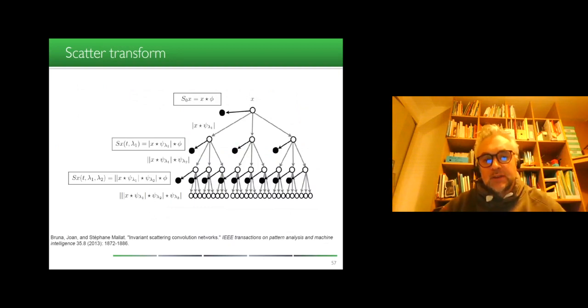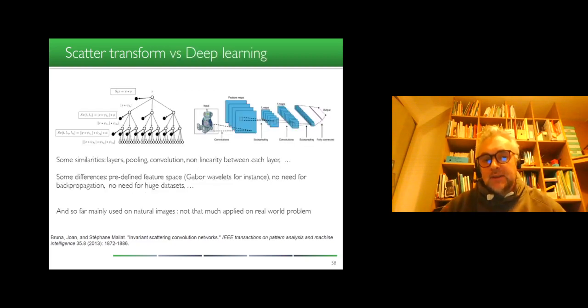So this scatter transform, I encourage you to have a look. It's inspired from the work by Stefan Mallat, one of the godfathers on the wavelets, which mixed some approach of wavelets with some inspiration of what is a convolutional neural network. It's not end-to-end learning, but however, it keeps the idea of some depth in the architecture. So layers, pooling, convolution, non-linearity between each layer is some similar point. But here it's a predefined feature space based on Gabor's wavelets, for instance, and there is no need for backpropagation, so no need for a huge dataset. And so there might be some alternative like this one to have a lighter architecture, yet deep architecture, especially when we have a not-huge dataset.